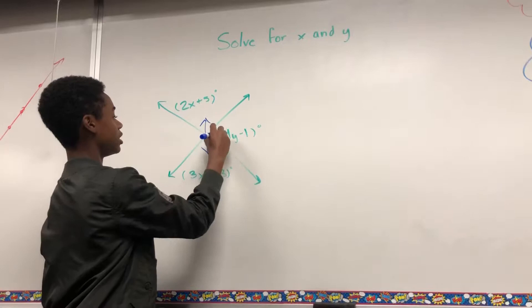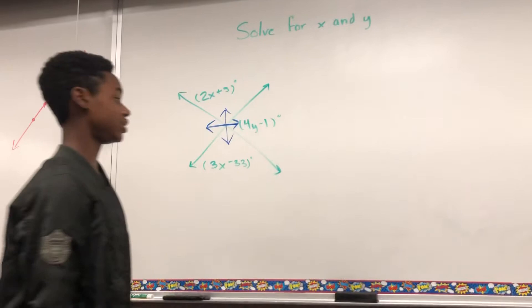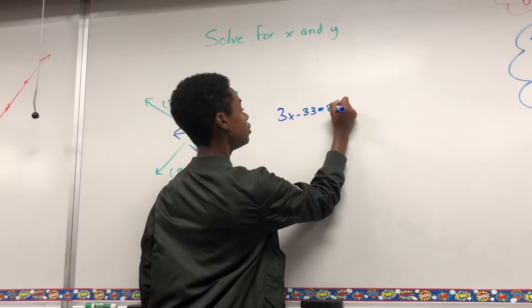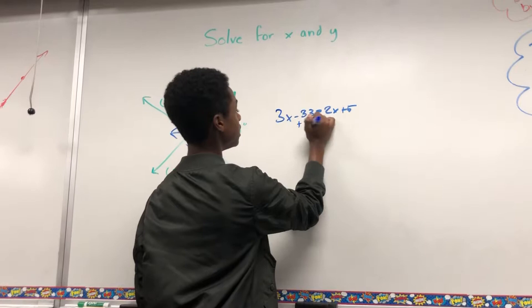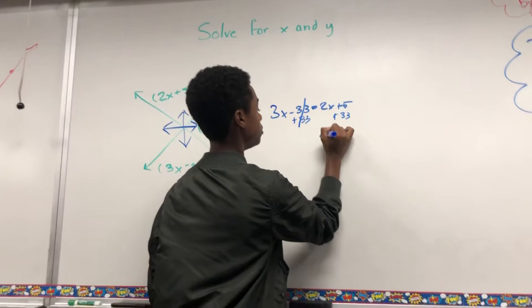See, so since there's no other y, you want to start with x. So 3x minus 33 equals 2x plus 4. I'm going to add the 33 to both sides. That cancels out and gives you 38 plus 2x equals 3x.